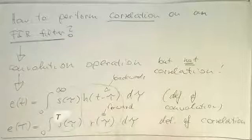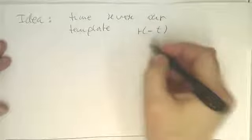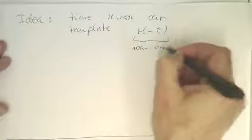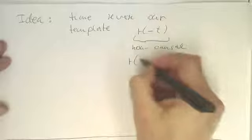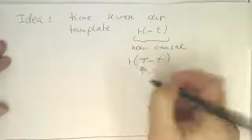But that's obviously easy to fix. So essentially, the only thing what we need to do is, the idea behind this is now, obviously, that we time reverse our template. So we could just write R of minus t. The problem is, this is non-causal. So in order to fix that, we create an R of capital T minus t. And this is the duration of the template.